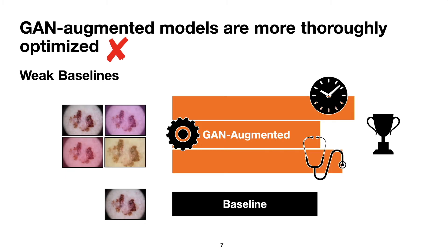Another problem is when the augmented models, which are often the main proposal of the work, are more thoroughly optimized compared to their baselines. This creates weak baselines and may suggest wrong directions for future research. Examples of this would be training augmented models for more time, or for a fixed number of epochs without using early stopping to monitor the validation metrics, which would enable comparing all models at their peak performance. Often the proposed augmented models are further investigated, their problems are diagnosed, a new set of hyperparameters or better crafted data augmentation is used, and with this they get better and better. The baseline, on the other hand, is not given as much chance to perform. When we do all this, it's not clear where the improvement in performance comes from — if it is from the GAN being added in the pipeline or from all these other optimizations that were done.